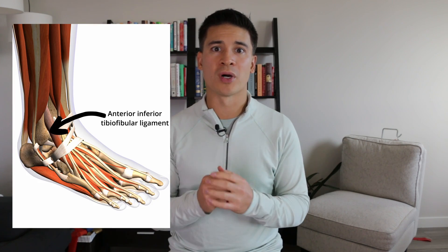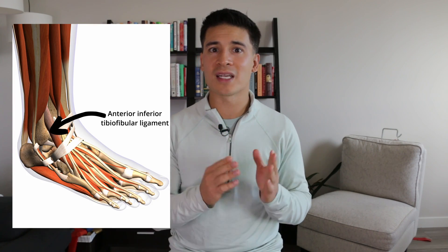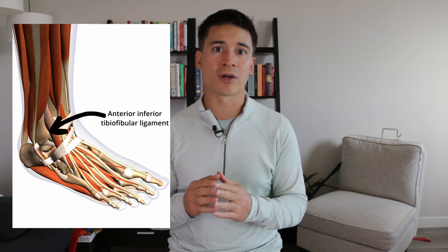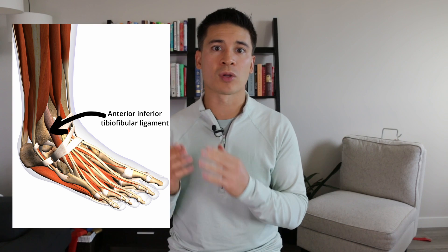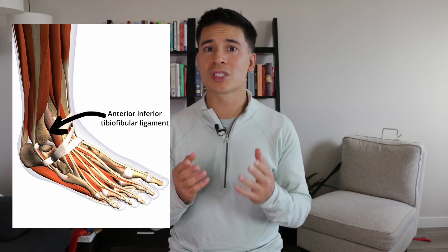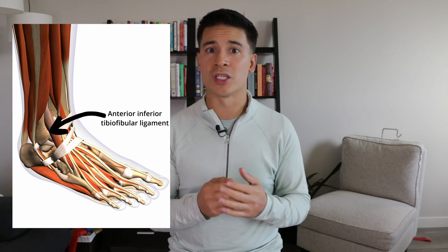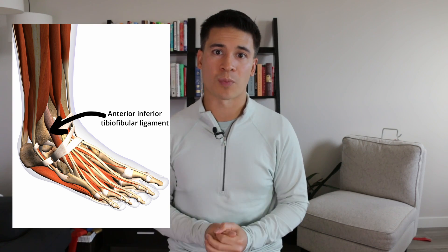At the bottom, in between these two bones, we have the anterior inferior tibial fibular ligament, which is the ligament that's injured with a high ankle sprain.